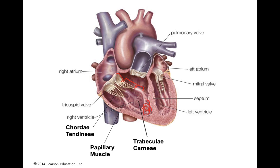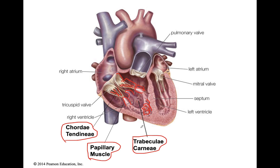Both right and left ventricles have these structures. You have a valve that's connected by cords called chordae tendineae. Chordae tendineae connects the valve to these bulging muscles called papillary muscles. Papillary muscles connect the chordae tendineae to the inner wall of the ventricle. These ridges you see in the inner walls of the ventricles are called trabeculae carnae — it kind of looks like carne asada when you're dissecting an actual sheep heart, which helps me remember the name.